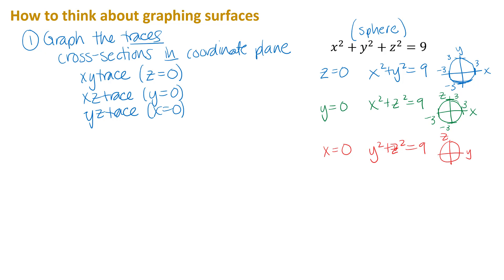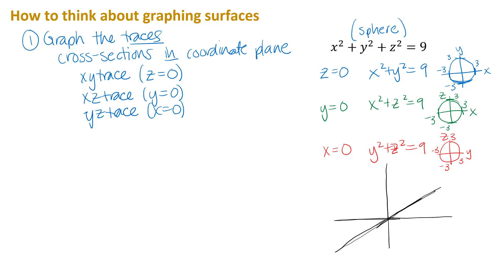For the YZ trace, when X equals zero, I get Y squared plus Z squared equals nine — again a circle crossing the Y and Z axes at three and negative three. So I did those three traces and drew little two-dimensional graphs of each. Now I want the three-dimensional graph, so I'll set up coordinate axes. Doing the 2D sketches first helps you see how far the axes need to go.